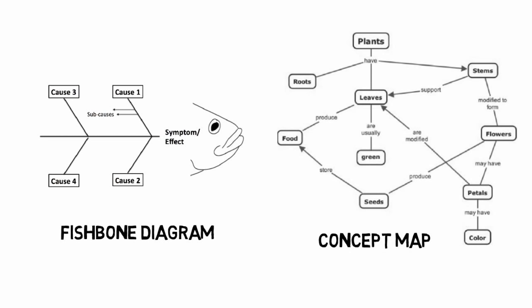For more complex problems, using tools such as a fishbone diagram or a concept map can help provide clarity, structure, and confidence that you have identified those causes most relevant to the problem.